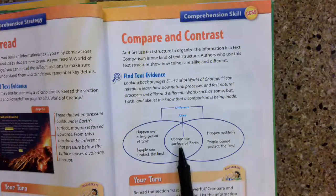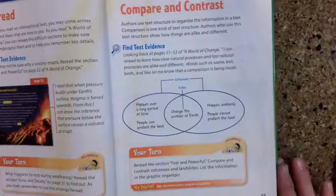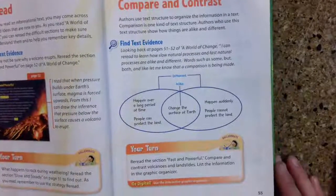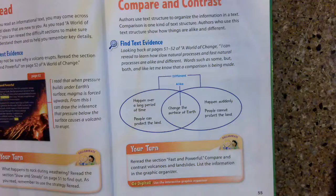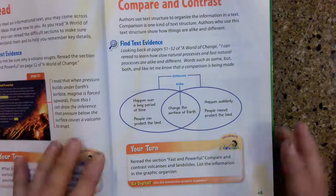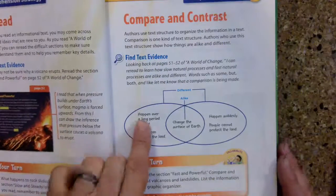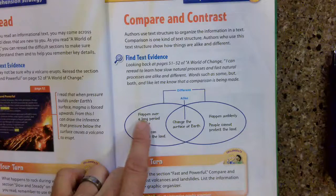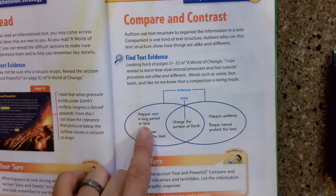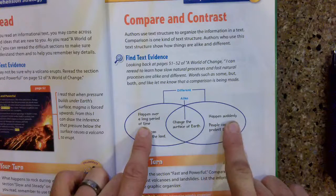First, both of them change the surface of the earth. When we read in our text, it talks about both of these natural processes. When the word 'both' is used, it means that's how they are alike. There are also some differences between them. One, the slow natural processes have obviously happened over a long period of time, whereas the fast ones happen suddenly.